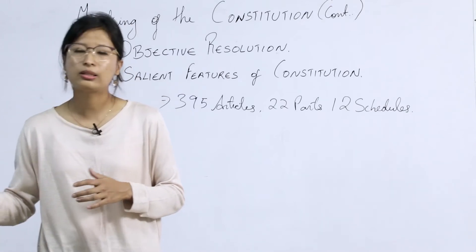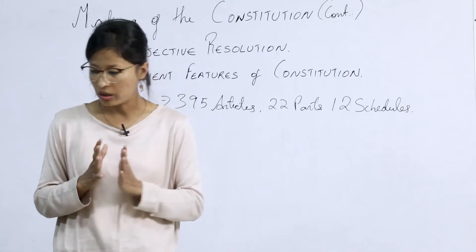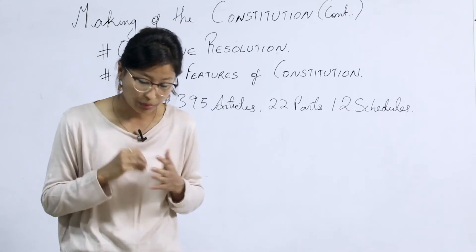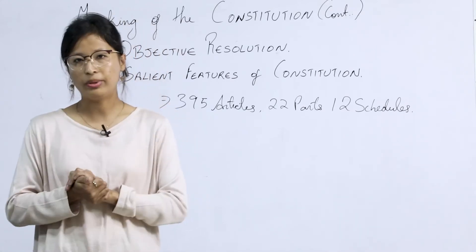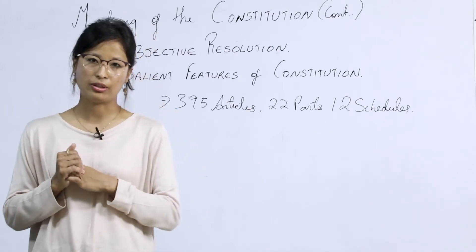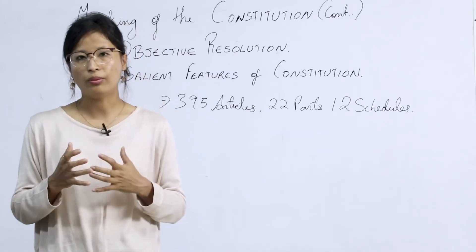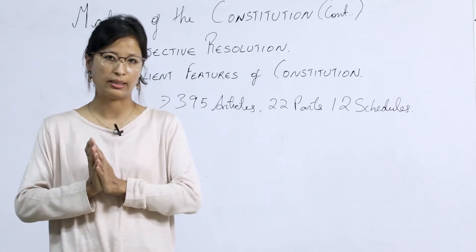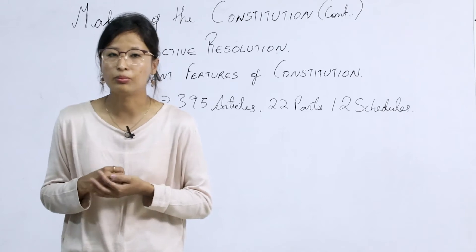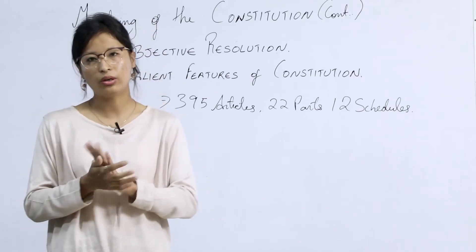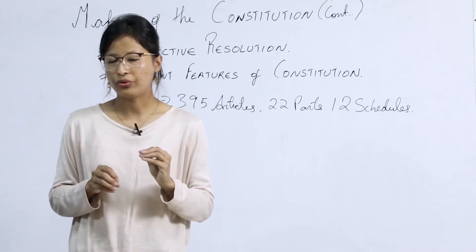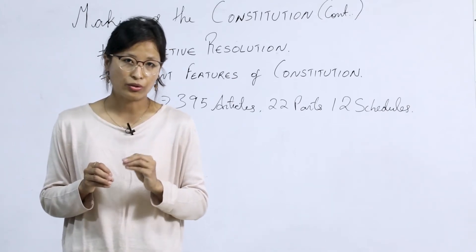Point number three: democratic and republican features. Our constitution has both. Democratic features refer to the people's right to choose candidates through elections, where universal adult suffrage plays an important role — the right to vote is given to every citizen of India.